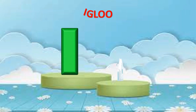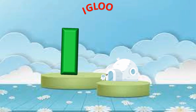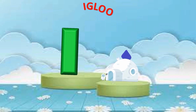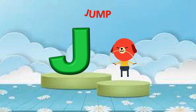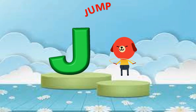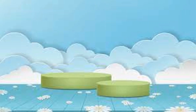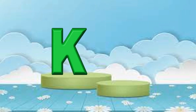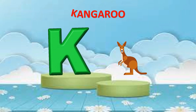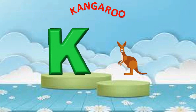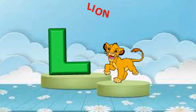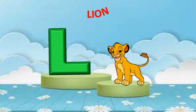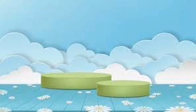I is for igloo, i-i-igloo. J is for jump, j-j-jump. K is for kangaroo, k-k-kangaroo. L is for lion, l-l-lion.